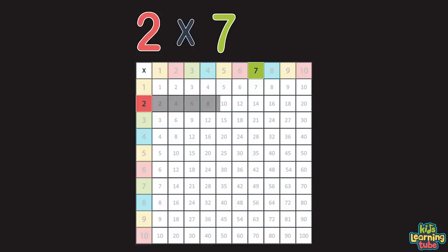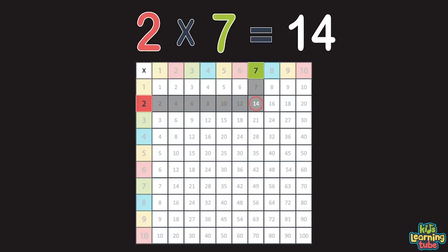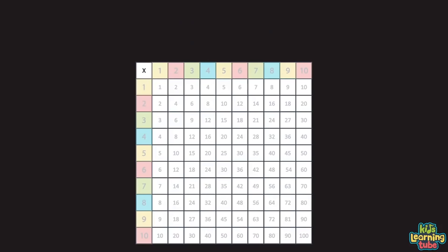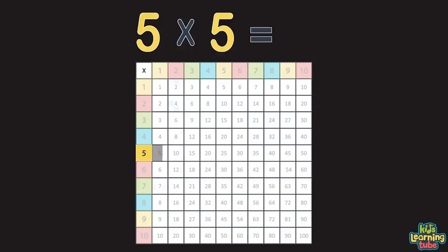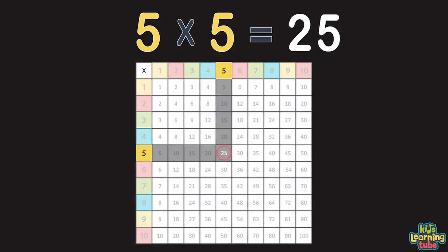Run a line from the two, if you know what I mean. And a line from the seven down to see where they meet. Where the two lines collide will be the answer you seek. Two times seven equals fourteen. This equation is complete. You can also use the horizontal number two and the vertical seven to achieve the same results. Now let's try to multiply five times five. Where the two lines meet, the answer is twenty-five.